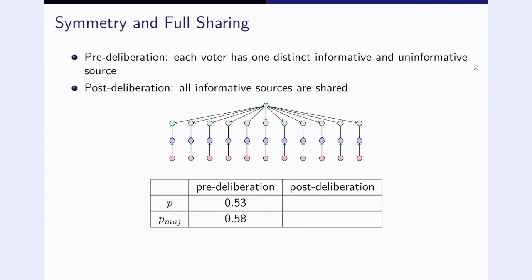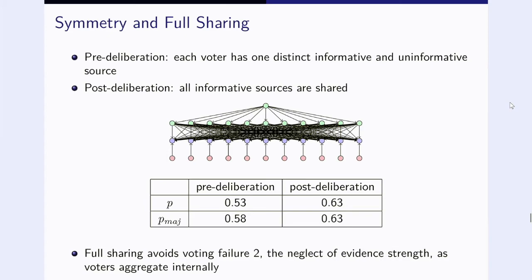Let's start with a very simple setting. Pre-deliberation, each vote has one distinct informative and uninformative source. The little dot here up here would be the state of the world, causally connected to the informative sources that goes to our votes. The votes are the blue ones here and here are the uninformative sources below. If you run this, then you will see that the individual competence is 0.53 and the group competence is 0.58. So there's already some benefit from aggregation. But if they now deliberate and they deliberate in our very simple sense of sharing sources, then things are much better.